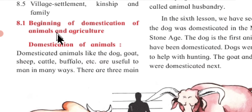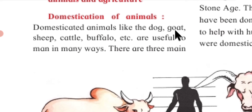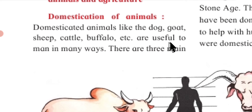Domestication of Animals. Domesticated animals like the dog, goat, sheep, cattle, buffalo, etc. are useful to man in many ways.